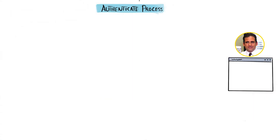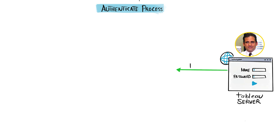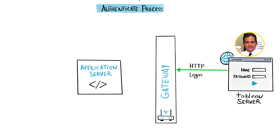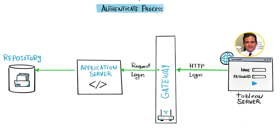Once Michael submits his credentials, a request is sent to the server as an HTTP request. The first thing it hits is the gateway. The gateway knows that the application server is the right component to handle the authentication process, so the gateway forwards it there. The application server then asks the repository to check if the username and password are correct and if Michael has permission to access our server.